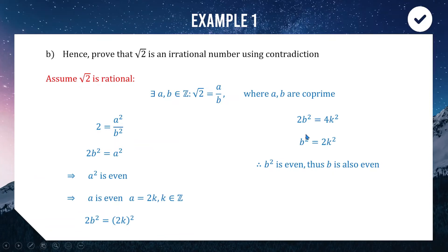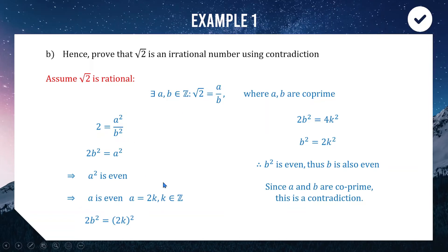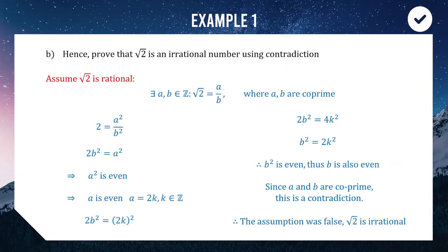We've arrived at a contradiction: we said √2 = a/b where a and b are co-prime, but we've shown both a and b are even, meaning they share a common factor of 2. Since our assumption leads to a contradiction, it must be false. Therefore, √2 is irrational.